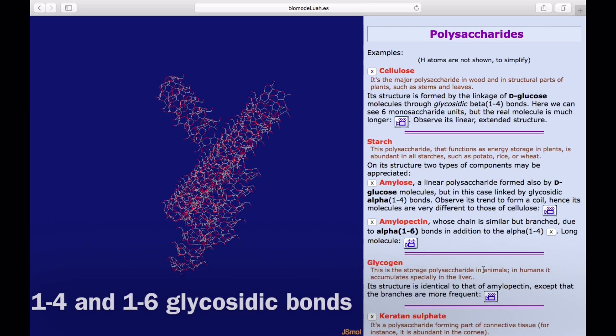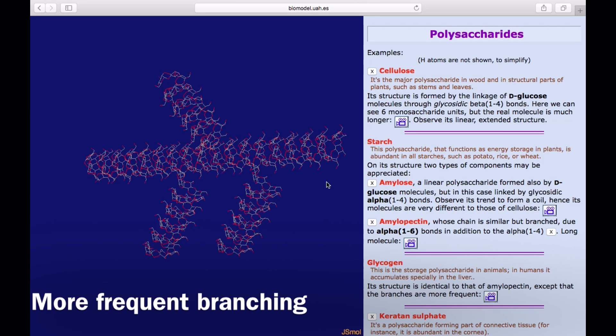The primary difference that you can see here is that the branching occurring in glycogen is much more frequent than that occurring in amylopectin.